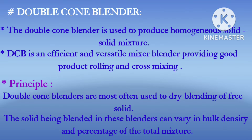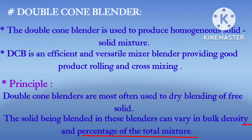The principle of the double cone blender: it is the most efficient for dry blending of free-flowing solids. The solids being blended vary in bulk density and percentage of total mixture. The material being blended is constantly intermixed as the cone blender rotates. Normal blending cycle time is 10 minutes and can be more or less depending upon the complexity of the material being mixed.